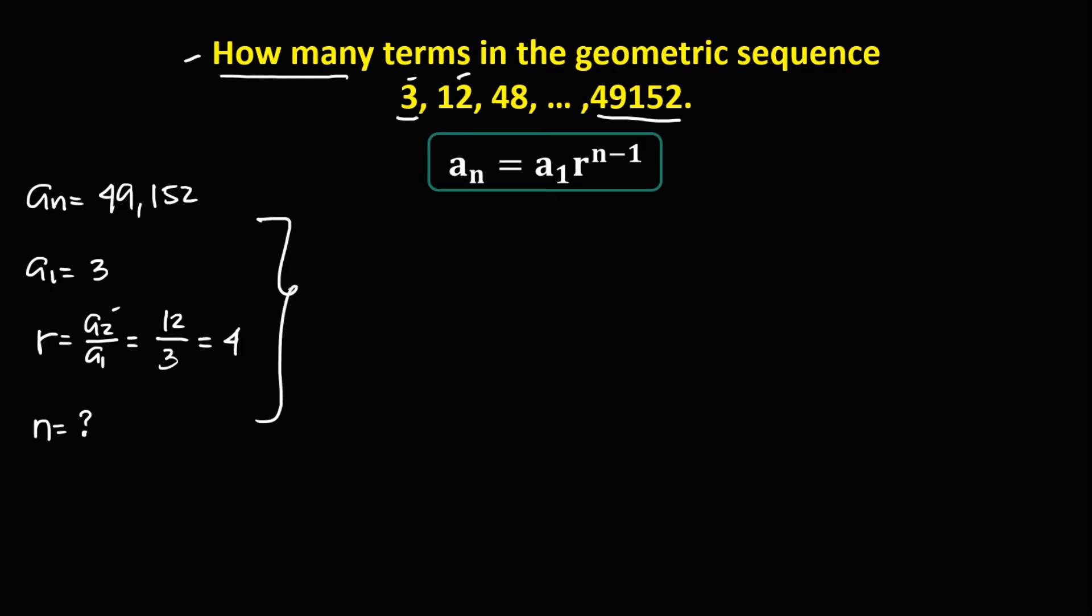To solve for the number of terms from this formula, we have a sub n, that's 49,152, equals a sub 1, that's the first term, positive 3, times r, that's positive 4 to the power n minus 1. Then to simplify...